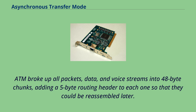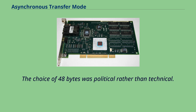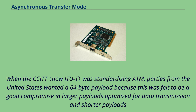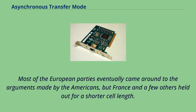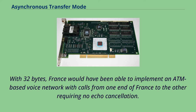The choice of 48 bytes was political rather than technical. When the CCITT was standardizing ATM, parties from the United States wanted a 64-byte payload, felt to be a good compromise between larger payloads optimized for data transmission and shorter payloads optimized for real-time applications like voice. Parties from Europe wanted 32-byte payloads because the small size simplifies voice applications with respect to echo cancellation. France and a few others held out; with 32 bytes, France would have been able to implement an ATM-based voice network with calls requiring no echo cancellation. 48 bytes was chosen as a compromise.